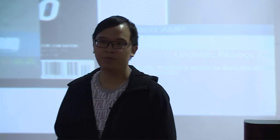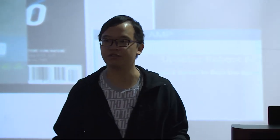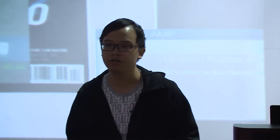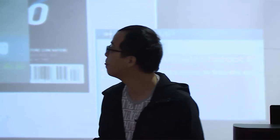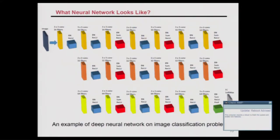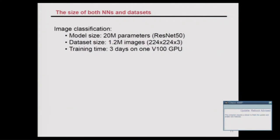In deep learning, data sets and model sizes are extremely huge. For image classification, a typical model like ResNet-50 has about 20 million parameters — stored in floating point, that's more than one megabyte. The dataset has 1.2 million images at 224×224×3. And training on 1,100 GPUs takes three days.